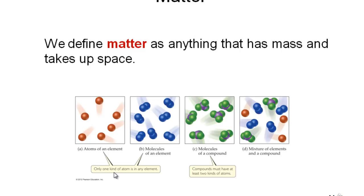The second picture is also from a single element because both spheres are the same color, meaning they are from the same element. The last two boxes are not all made of same-color balls. We see molecules of a compound. A compound should contain two or more atoms of two or more different elements.